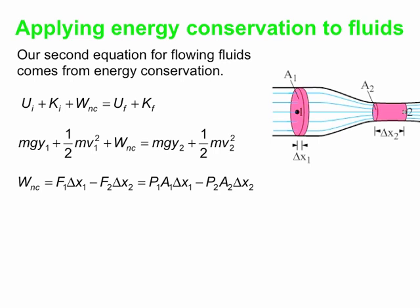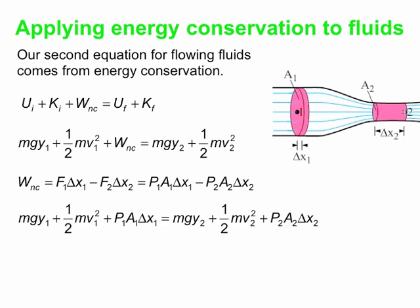We can throw that into the work. So we expand our work into two different terms: pressure, area, delta x at each place, one plus, one minus. Then we get a more complicated version of the energy equation.